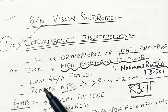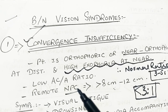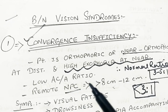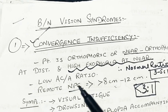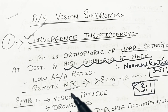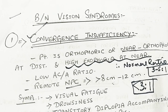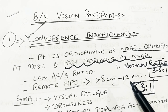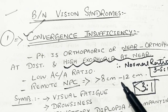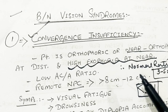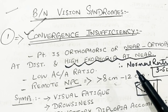In convergence insufficiency, the patient has a low AC/A ratio and a remote NPC — near point of convergence. Remote means the near point of convergence is at more than 8 to 12 cm, and it may be at 15 cm, 25 cm, 30 cm, or even 50 cm.